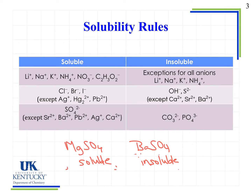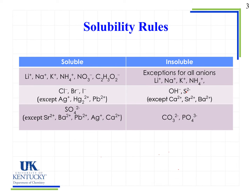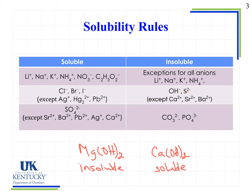For compounds that are insoluble, if we see lithium, sodium, potassium, or ammonium, we know those are going to be soluble regardless of what the anion is. If we look at hydroxides and sulfides, they will be insoluble — with the exceptions being calcium, strontium, and barium. So magnesium hydroxide is going to be insoluble because it's a hydroxide, but calcium hydroxide is going to be soluble because it's an exception to the insolubility of hydroxides.